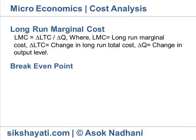Long run marginal cost (LMC) is the extra cost on production of one more unit of a commodity. LMC is equal to delta LTC divided by delta Q, where LMC is long run marginal cost, delta LTC is the change in long run total cost, and delta Q is the change in output level.